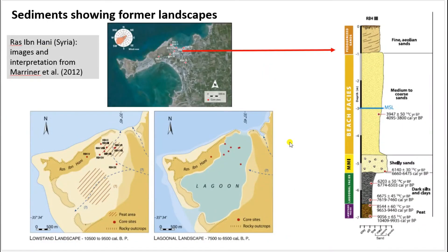When you have detailed stratigraphic records taken through cores and boreholes, you can get a very good picture of environmental change. This is an example from Syria, from Ras Ibn Hani, from work by Nick Mariner and colleagues. We can see here the core locations and an example of one of the cores with the different sediments within it. At the base there is a layer of peat — organic matter which must have been deposited on land — but it is now located seven meters below the modern ground surface. This indicates that sea level must have been lower in order for this to have been land.